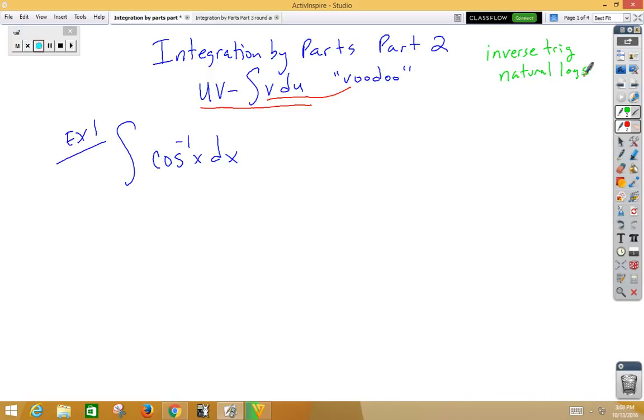In this problem, we're going to use the acronym LIATE to help us figure out what u is. LIATE stands for L - any kind of logarithm, usually natural log, could be regular logarithms. I stands for inverse trig.